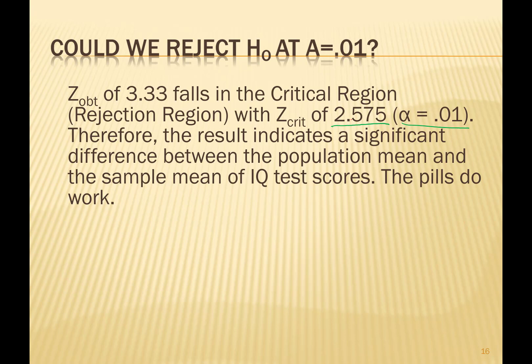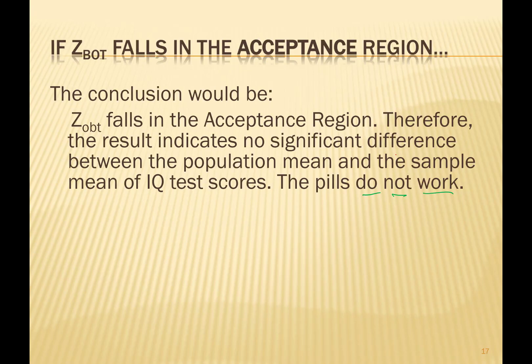We also know we can afford alpha of 0.01, using Z-crit of 2.575, and the same result holds. We can provide these numbers to show this is a strong statement — there's less than 1% chance of error with our conclusion. So this is a better and stronger statement for our research. In the case that our Z-obtained falls in the acceptance region, the conclusion would be: Z-obtained falls in the acceptance region; therefore, the result indicates no significant difference between the population mean and the sample mean of IQ test scores — pills do not work.